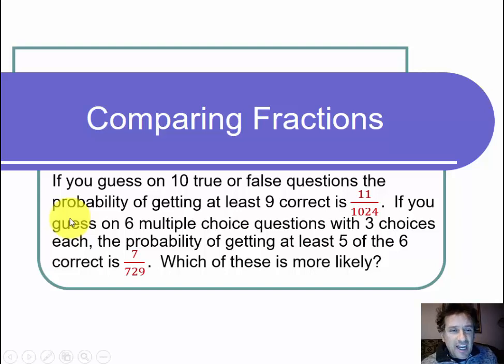If you guess on six multiple choice questions, three choices each, the probability of getting at least 5 of the 6 correct is 7 over 729. Which of these is more likely?